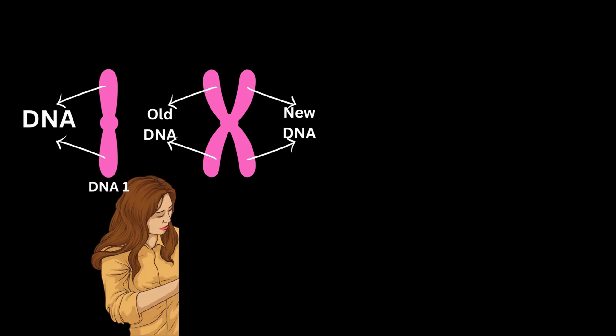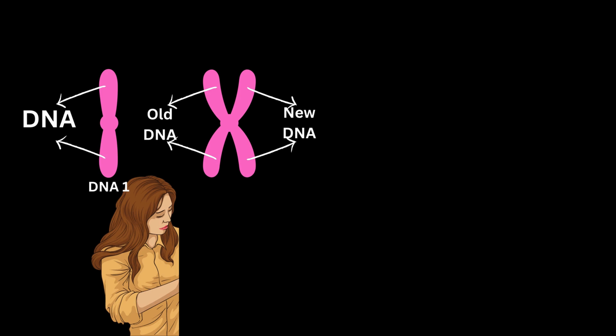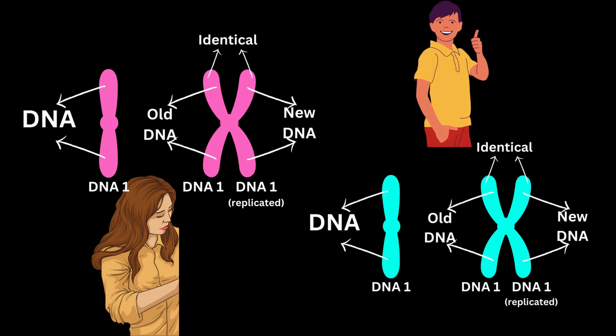DNA 1 of my mother is going to replicate to give an exact same DNA 1. DNA 1 of my father is going to replicate to give an exact same DNA 1 — which is exactly the same as DNA 1 of my father. These two genetically identical pieces of DNA are called sister chromatids.